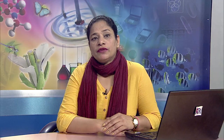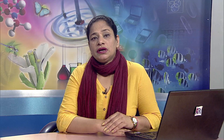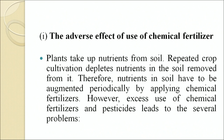Agrochemicals are applied to the soil mainly to replenish or replace soil nutrients by using chemical fertilizers. Plants take up nutrients from the soil, and repeated crop cultivation depletes those nutrients, so nutrients have to be augmented periodically by applying chemical fertilizers. However, excess use of chemical fertilizers leads to widespread imbalance in soil nutrients. Most chemical fertilizers contain macronutrients like nitrogen, phosphorus and potassium (NPK). Excessive addition of NPK causes plants to absorb more micronutrients from the soil, making the soil deficient in micronutrients like iron, zinc and copper, thus decreasing soil productivity.